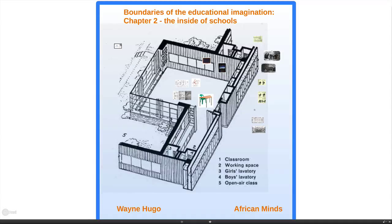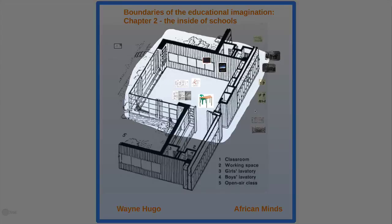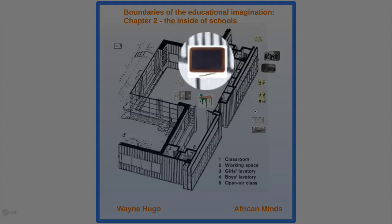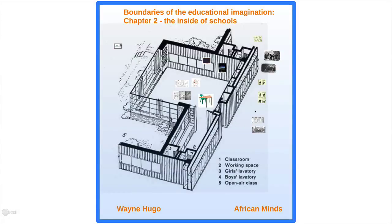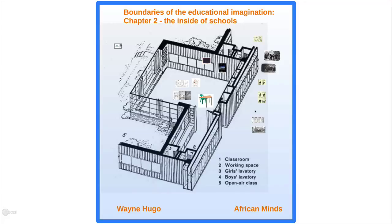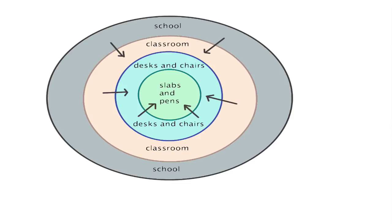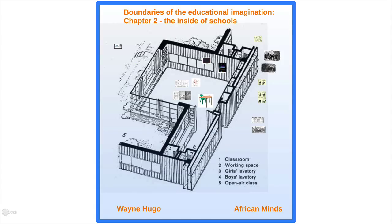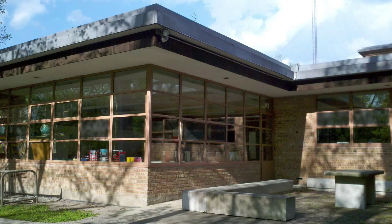In the first video we took you from one school to all the schools of the world. Now we're going to move from one school inwards and take a look at what goes on in terms of classrooms, desks, chairs, writing equipment, and how that's developed and changed over the last 200 years. What you can see in front of you is a picture of a beautiful classroom — the Crow Island School, considered to be one of the most successful architectural examples of a classroom.